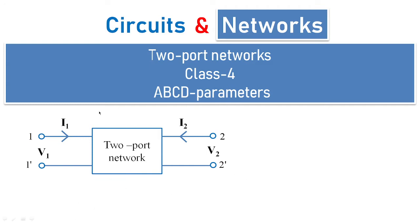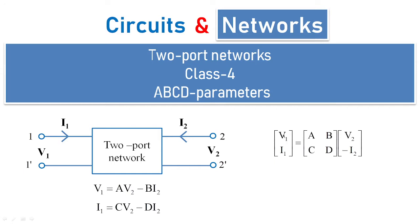When a two-port network is given, we have V1 = AV2 − BI2 and I1 = CV2 − DI2. This is the basic matrix formed for transmission line parameters, where in matrix form V1 and I1, the input port parameters, are on the left side, equal to the ABCD transmission line parameters multiplied with output voltage and output current.